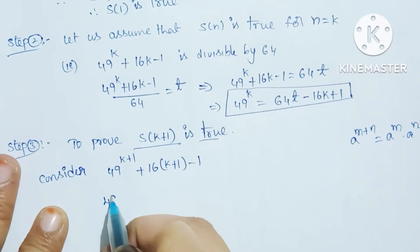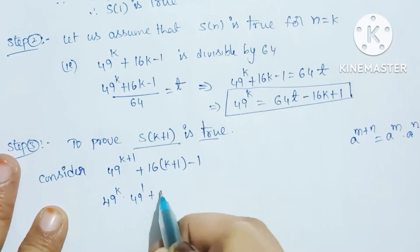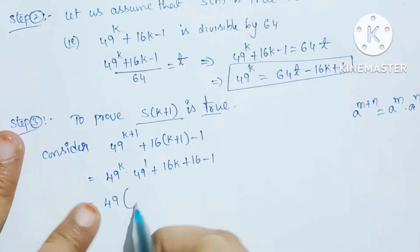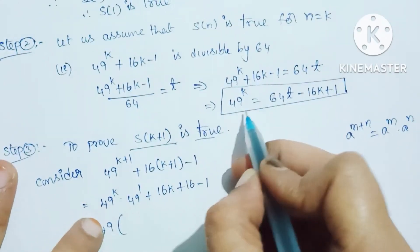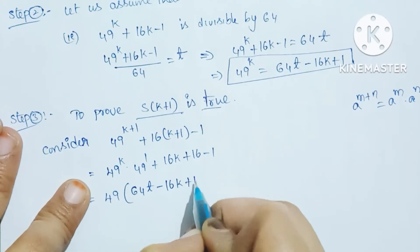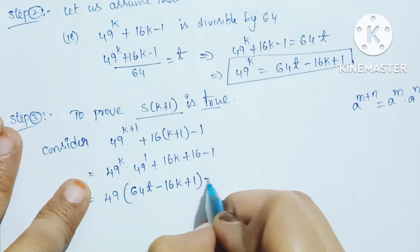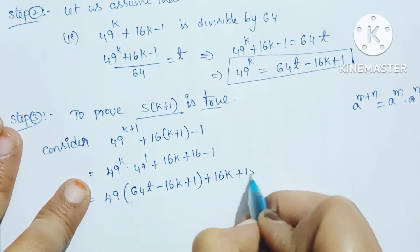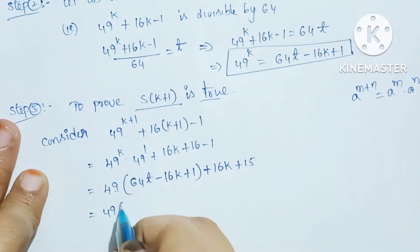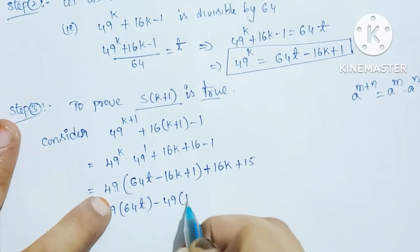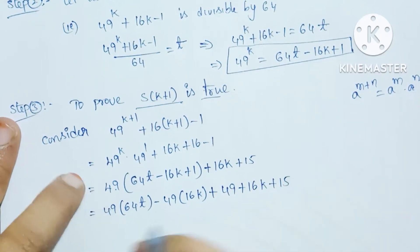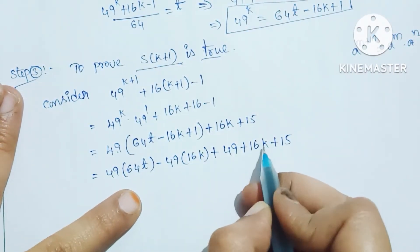49 power (k+1) plus 16(k+1) minus 1 expands to 49 into 49 power k plus 16k plus 16 minus 1. Using the Step 2 value for 49 power k, substituting 64t minus 16k plus 1: we get 49 into (64t minus 16k plus 1) plus 16k plus 15. Expanding: 49 into 64t minus 49 into 16k plus 49 plus 16k plus 15.